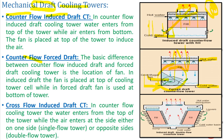Cross flow induced draft cooling towers are among the most widely used types in industry. In cross flow, unlike counter flow, water enters from the top but air enters from the sides of the tower. So instead of a counter arrangement, air crosses the water stream. A fan at the top creates negative suction that draws the air upward and rejects it to the atmosphere.